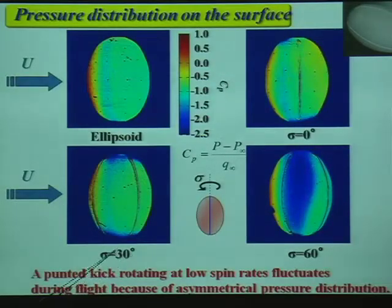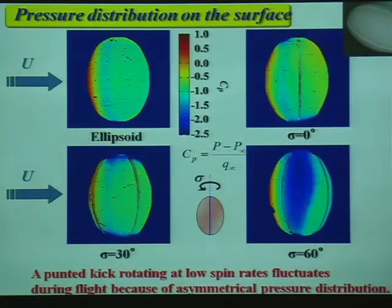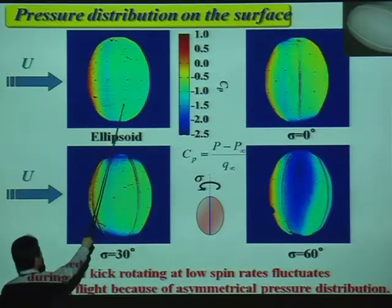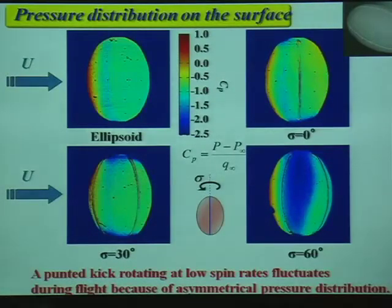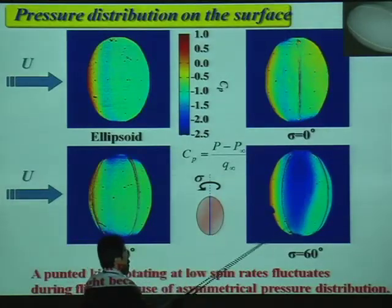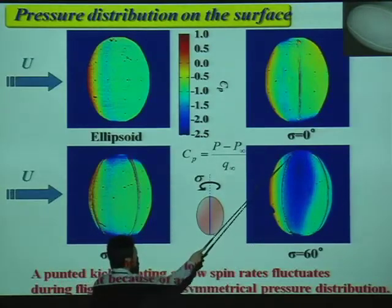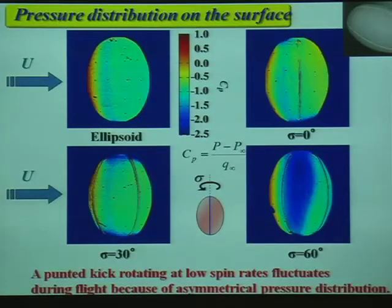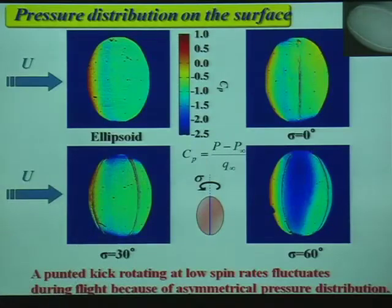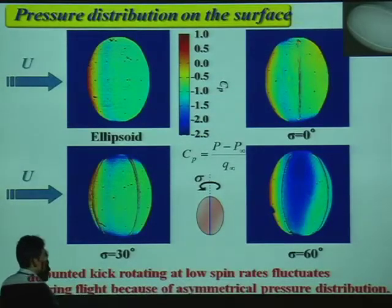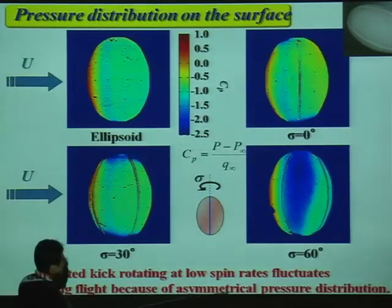In the case of 30 degrees, the pressure distribution is similar to that of an ellipsoid. At zero degrees it is almost the same as an ellipsoid. However, at 60 degrees, a low pressure region appears. It seems that the seam at 60 degrees acts as a trigger for initiating that low pressure. At 30 or 0 degrees, the seam doesn't act as a trigger. Therefore, a punted kick rotating at a low spin rate fluctuates during flight because of asymmetrical pressure distribution.